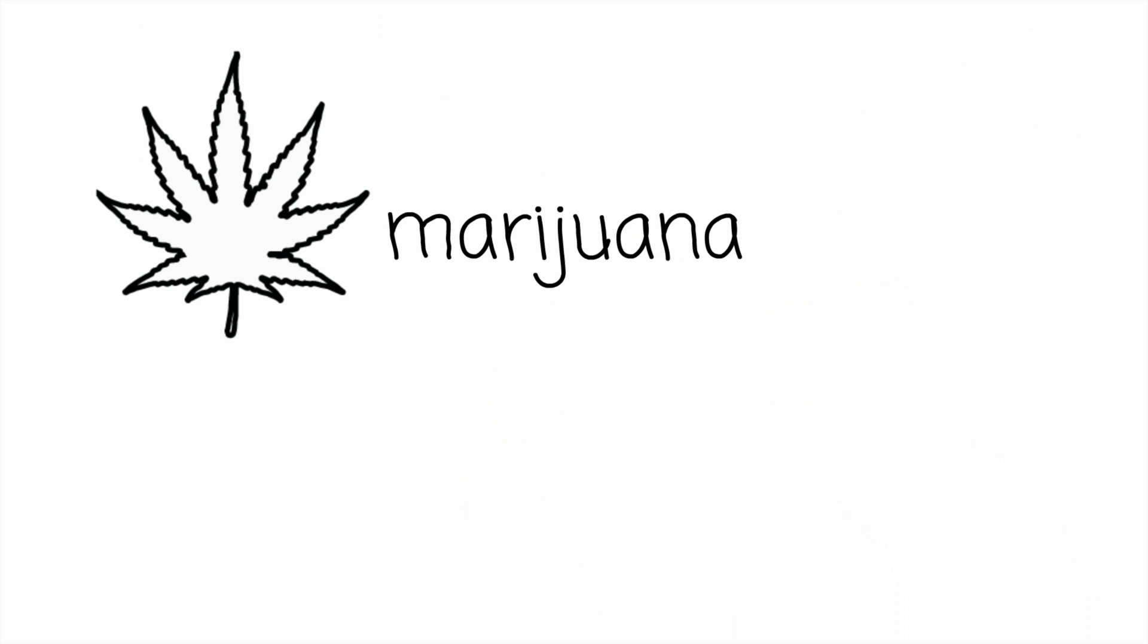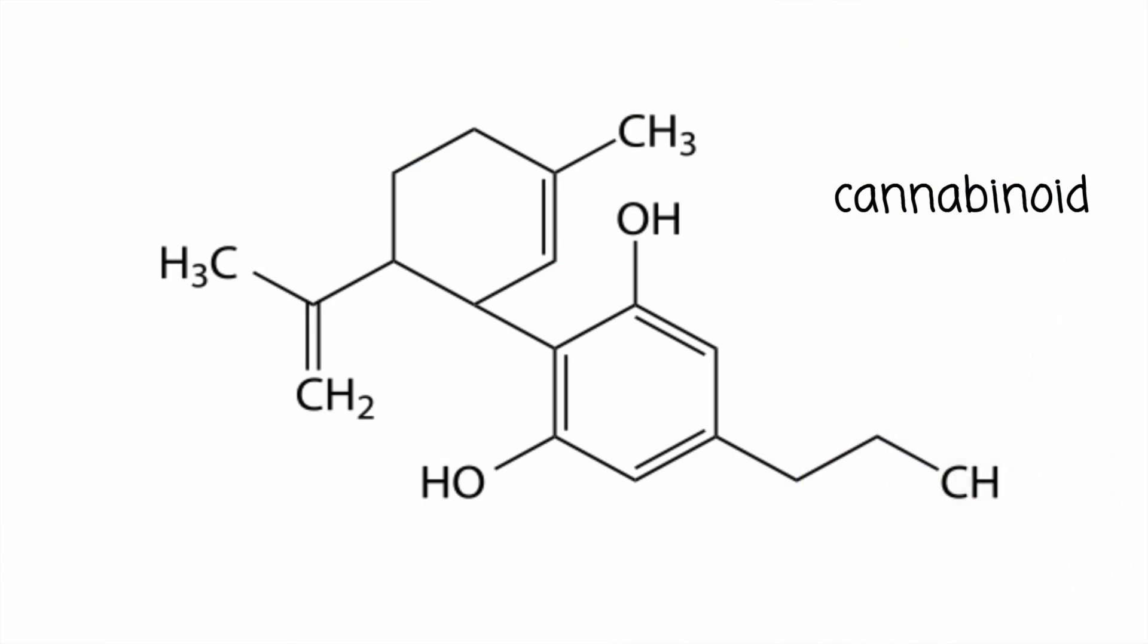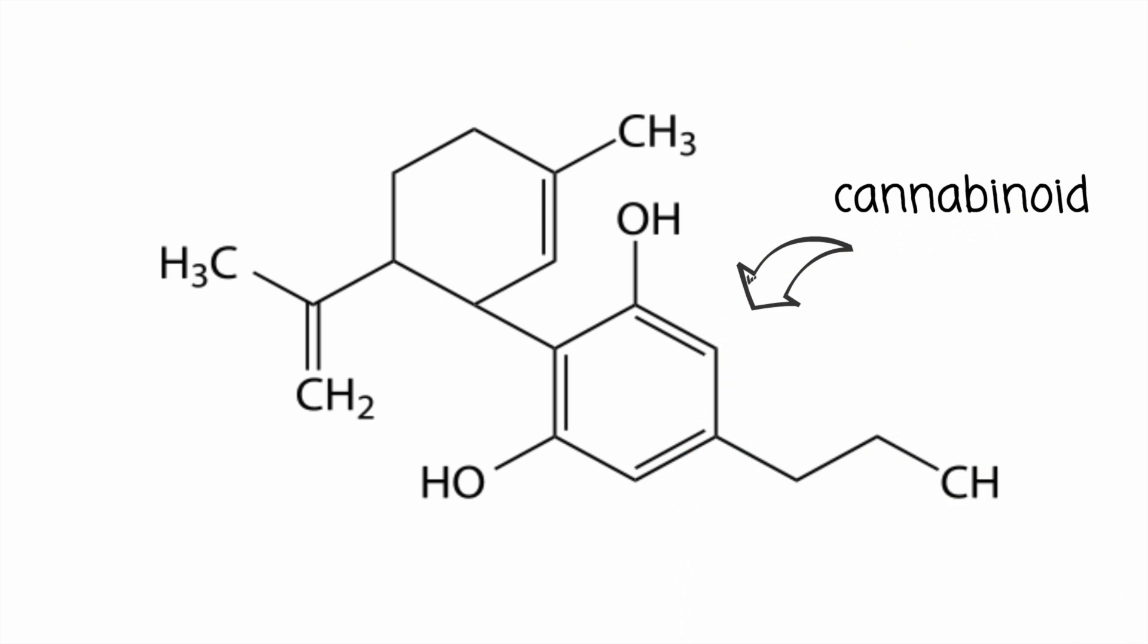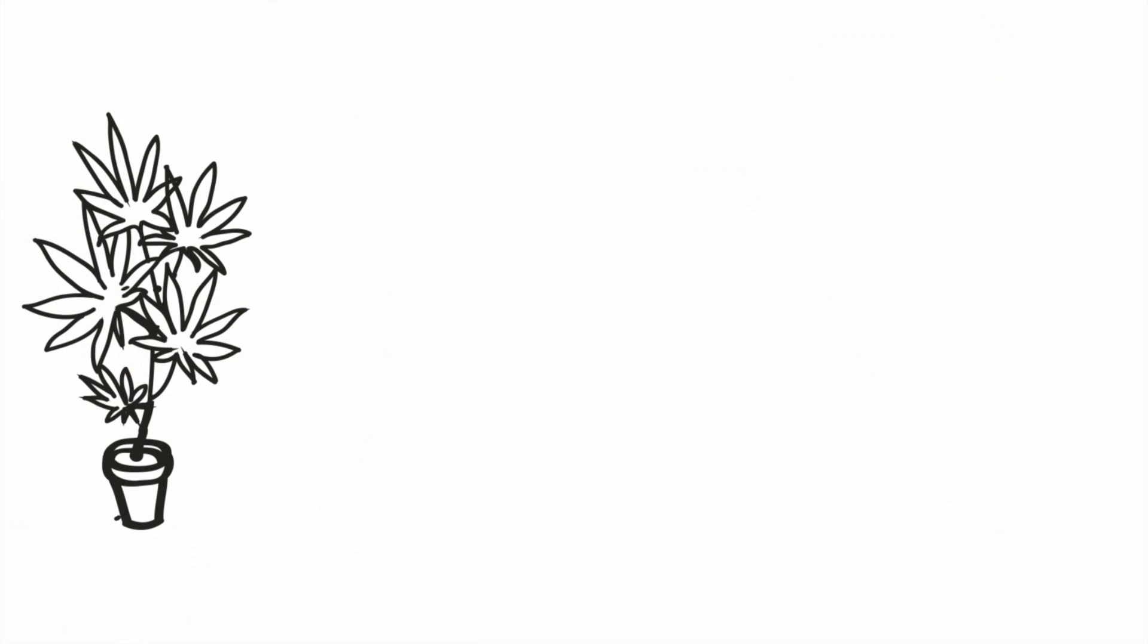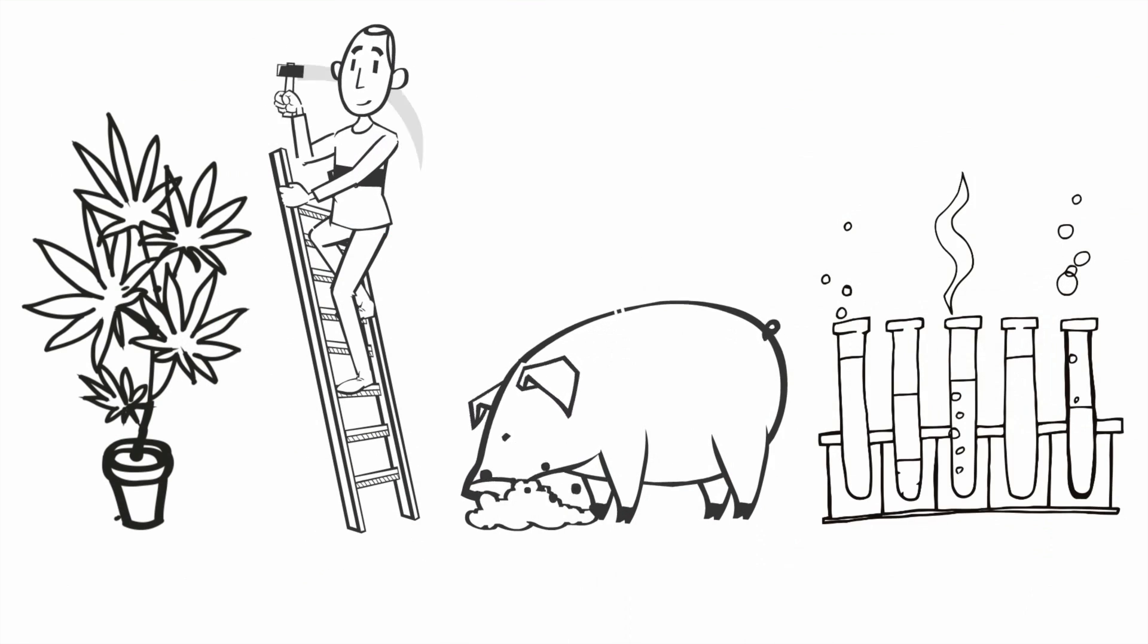Here's where it gets slightly tricky. Cannabis is made of 500 components, 80 of them called cannabinoids. Cannabinoids are chemicals from the cannabis plant, or other chemicals just like them made in human and animal bodies, or man-made in labs.